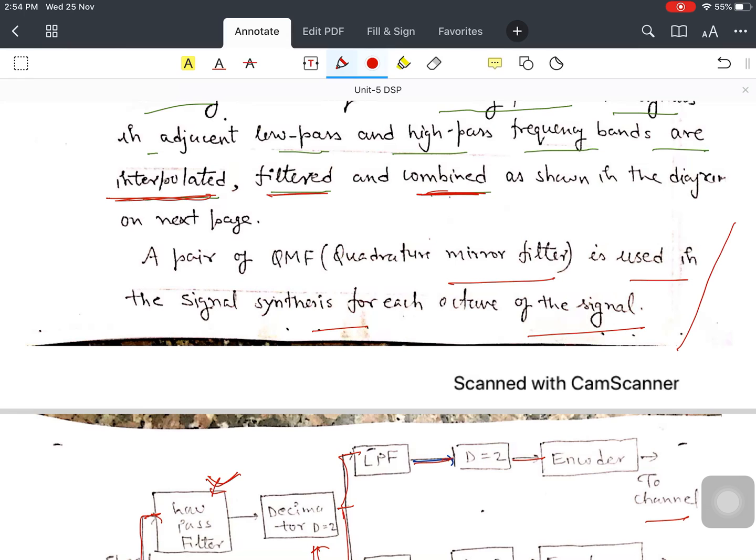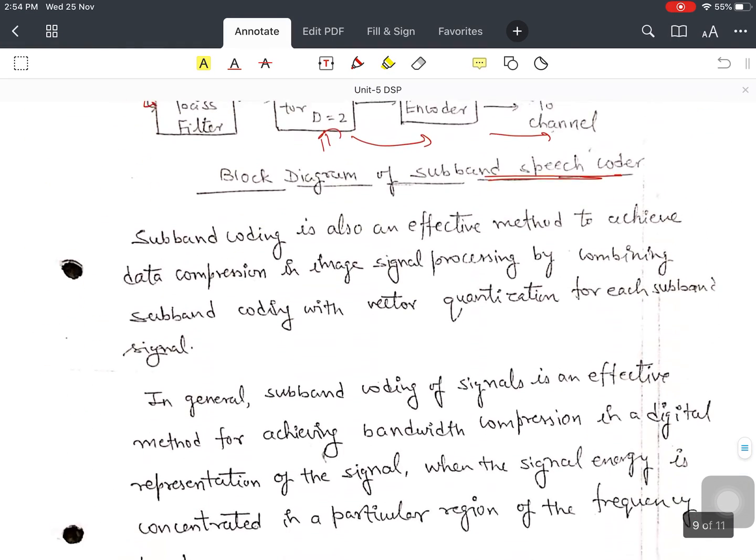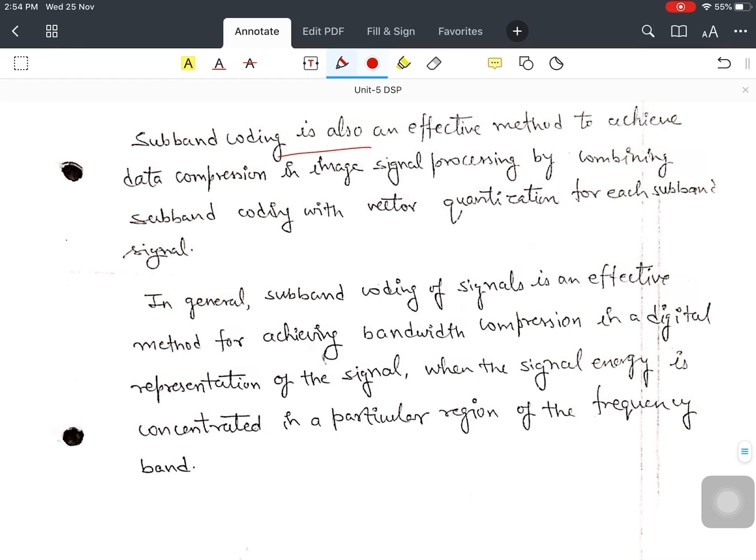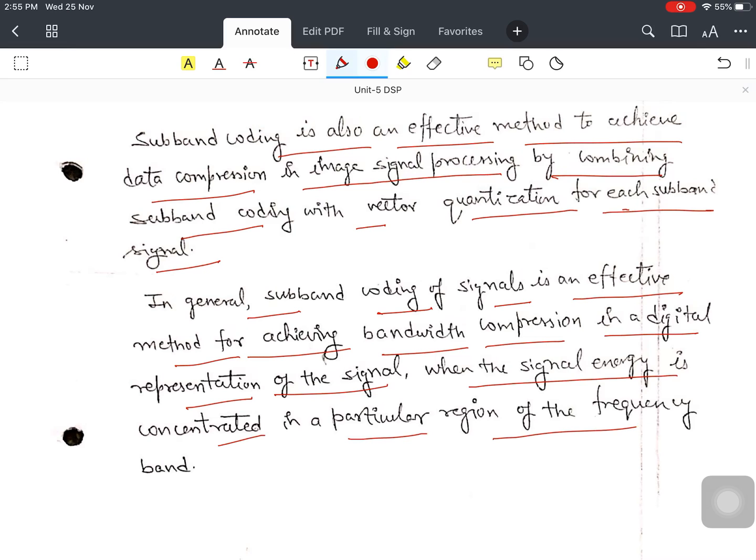Subband coding is also an effective method to achieve data compression because you are doing decimation. When you do decimation, you can compress the data. Data compression in image signal processing by combining subband coding with vector quantization for each subband signal. In general, subband coding is an effective method for achieving bandwidth compression in digital representation of the signal when the signal energy is concentrated in a particular region of the frequency band.